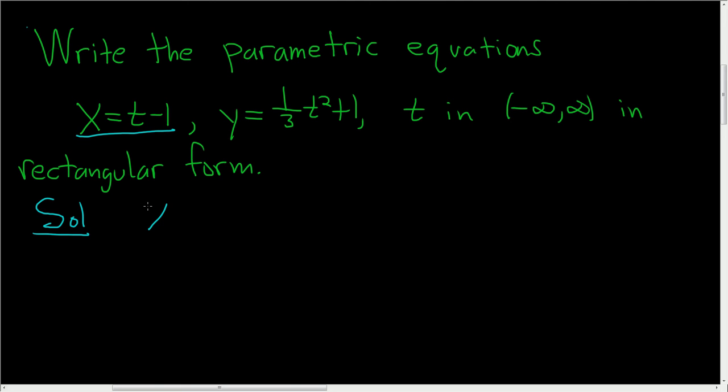So we have x equals t minus 1. And to solve this for t, all we have to do is add 1 to both sides. So we get x plus 1 equals t, or t is equal to x plus 1.